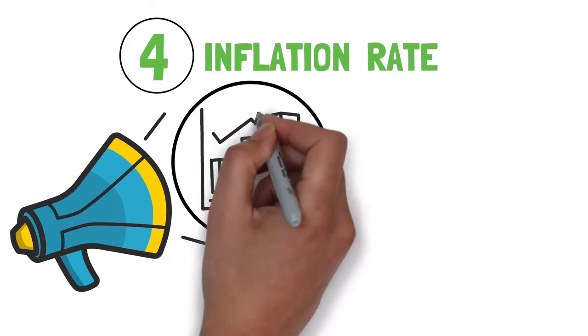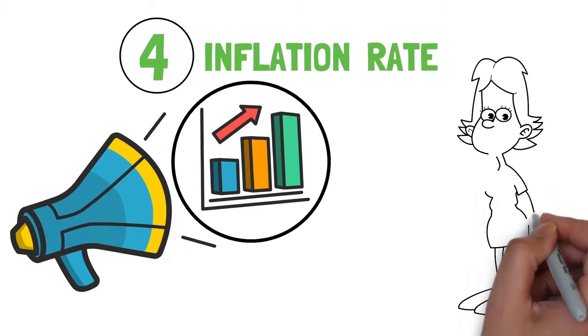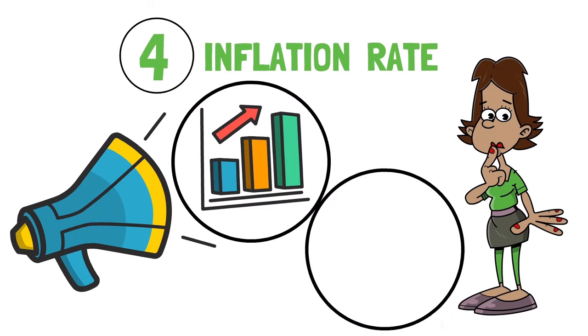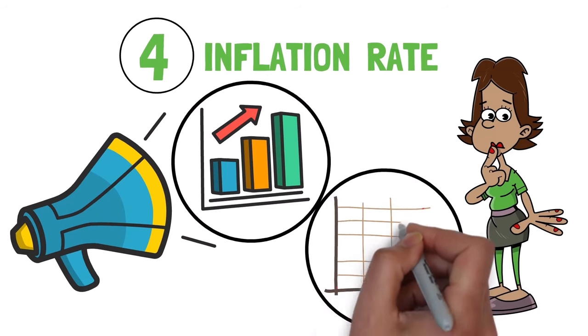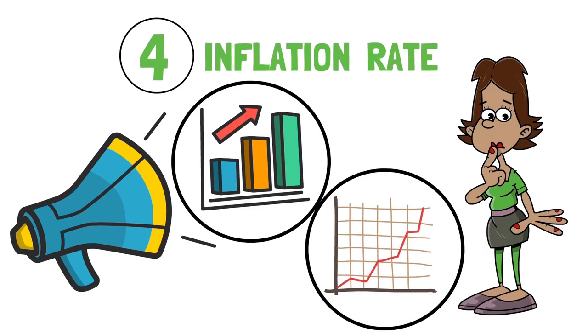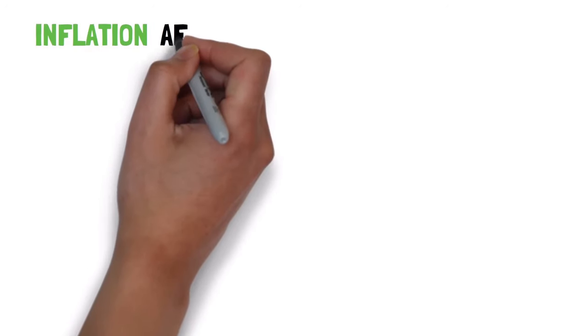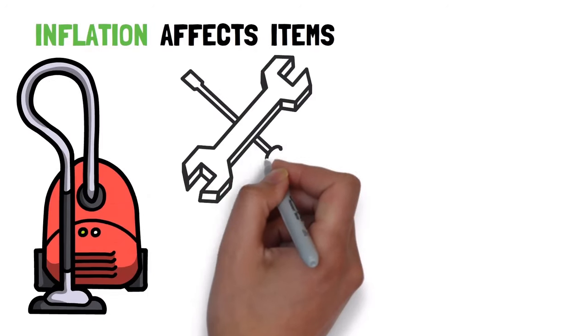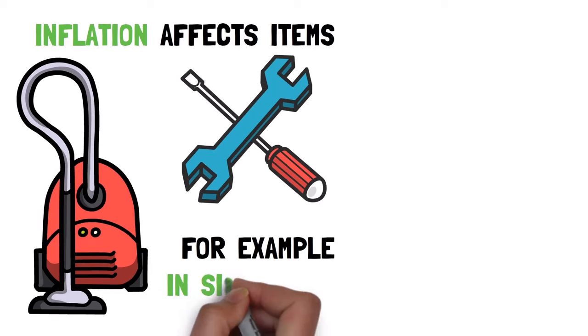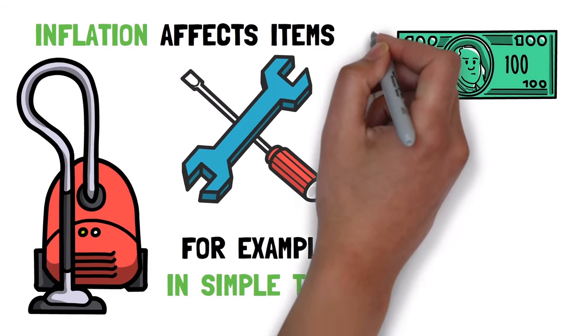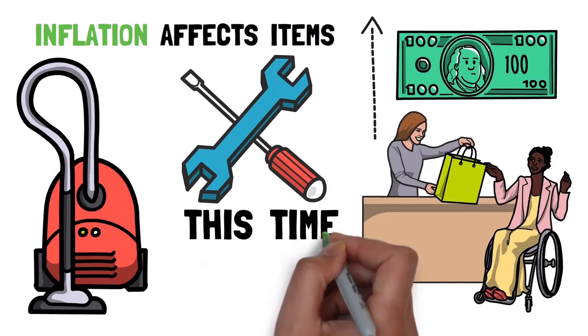Pillar number four: inflation rate. You may be hearing on the news that there's an inflation right now. But what exactly does this mean? An inflation rate is the rate at which prices tend to increase over a certain period of time. Inflation affects items such as home products and services. In simple terms, it costs more to buy the same thing you purchased about this time last year.